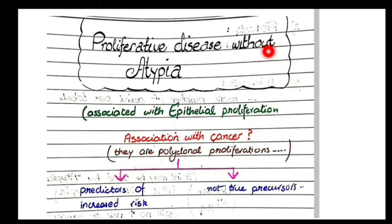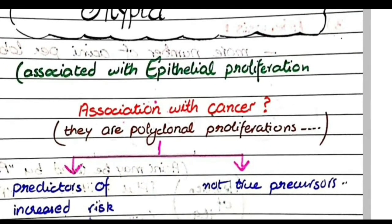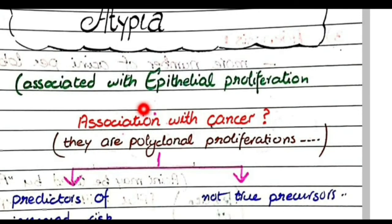Without atypia means that the proliferating epithelial cells do not show atypical morphology. As they do not show atypical morphology, they are not true precursors of cancers. To understand their association with cancer, we first need to understand the concept of polyclonal proliferations.